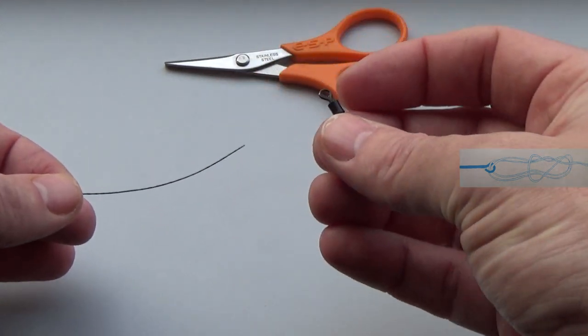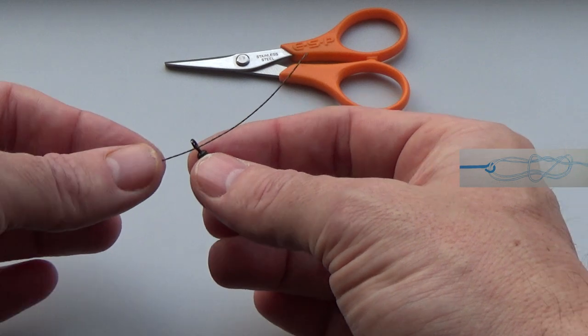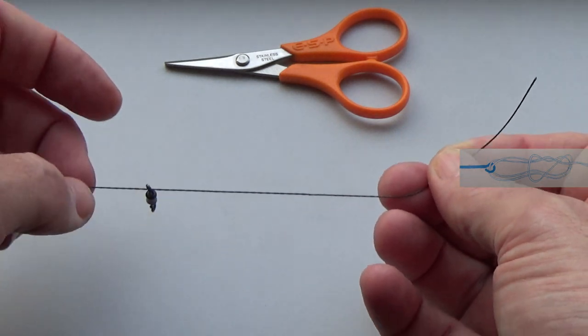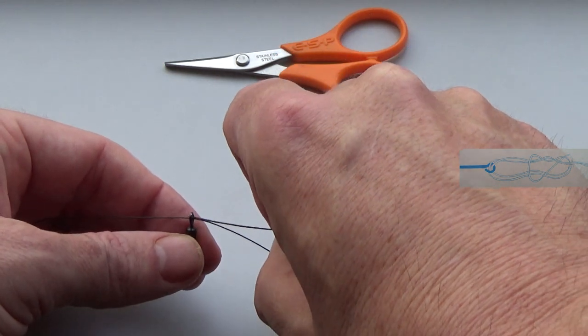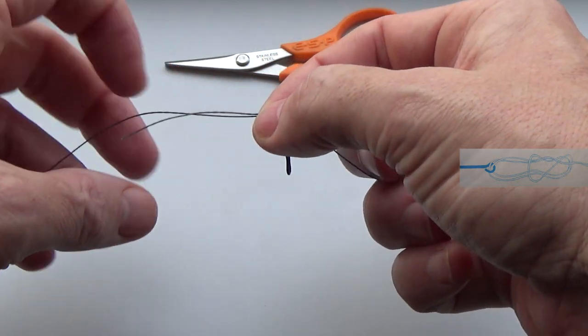I've got a piece of braid and a swivel, and I'm going to tie the braid to that swivel. Come through the eye of the swivel like so, and go back on yourself so that the line's doubled.